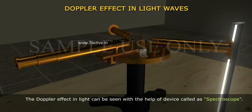The Doppler effect in light can be seen with the help of a device called a spectroscope.